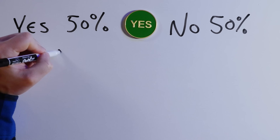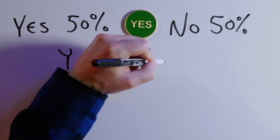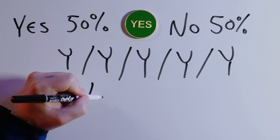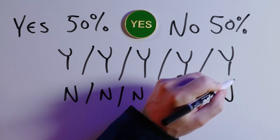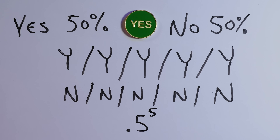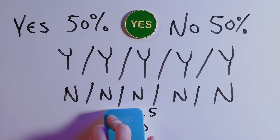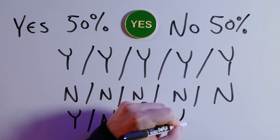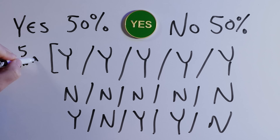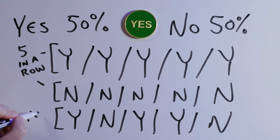Cool. The odds of getting 5 yeses or 5 nos in a row? Well, that's also .5 raised to the power of 5. Every combination of yes and no has exactly the same chance of occurring. But you know deep down that getting 5 in a row doesn't happen nearly as often as a mix of the two. How can two things have the exact same probability of occurring, yet occur less often?